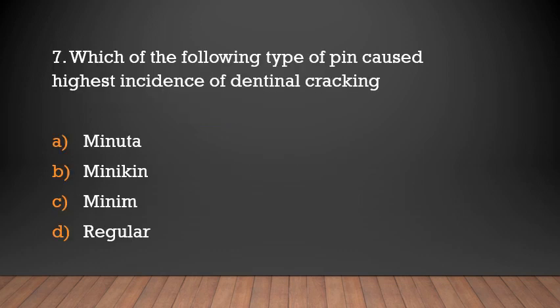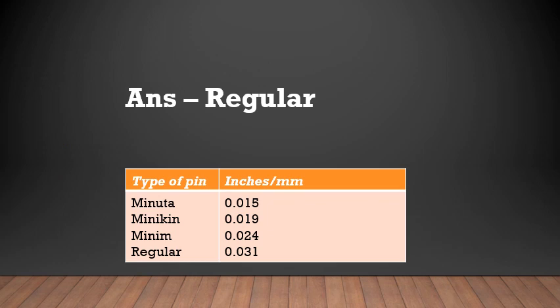Which type of pin causes the highest incidence of dentinal cracking: Minuta, Minikin, Minim, or Regular? The answer is Regular. Regular pins exhibit the highest incidence of dentinal cracking. Pin sizes are: Minuta 0.015 inch, Minikin 0.019 inch, Minim 0.024 inch, and Regular 0.031 inch.